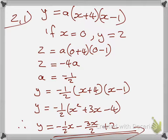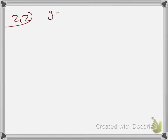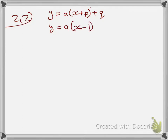Moving on to 2.2 — this one does not have x-intercepts; it's suspended above. So you write it in completed square format: y equals a times open bracket x plus p, close bracket, squared, plus q. Remember, this one is squared plus q.